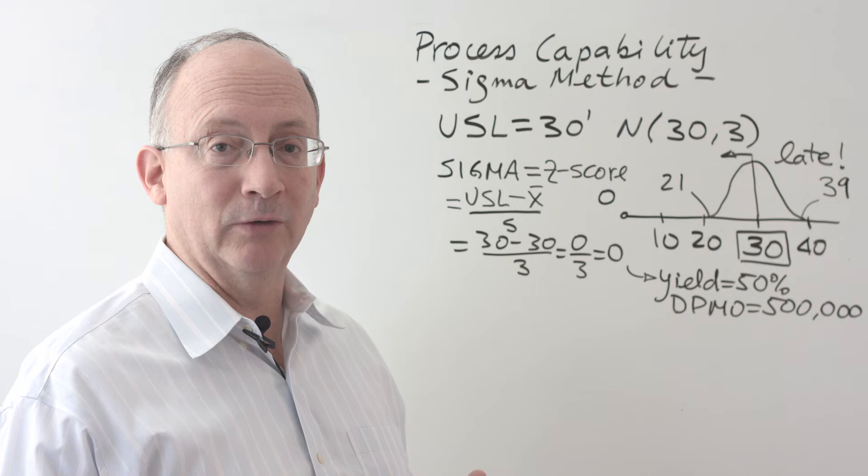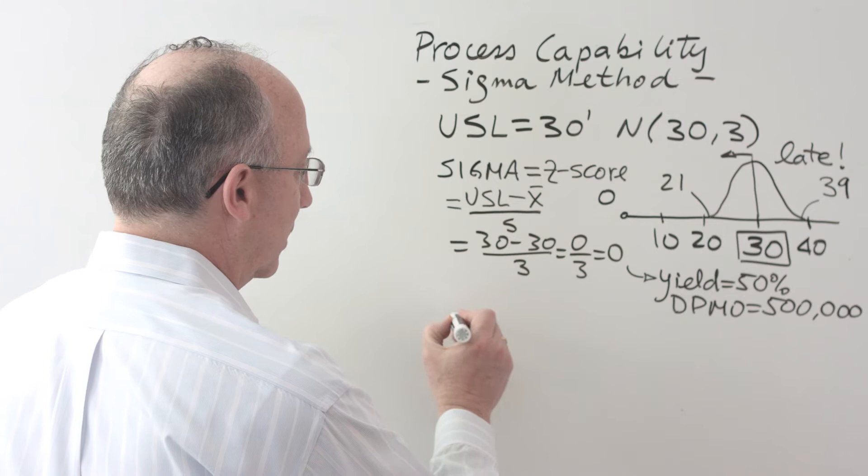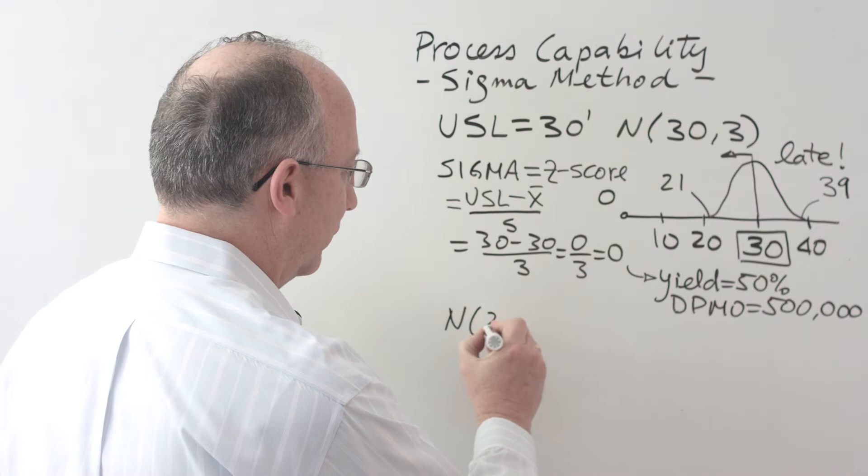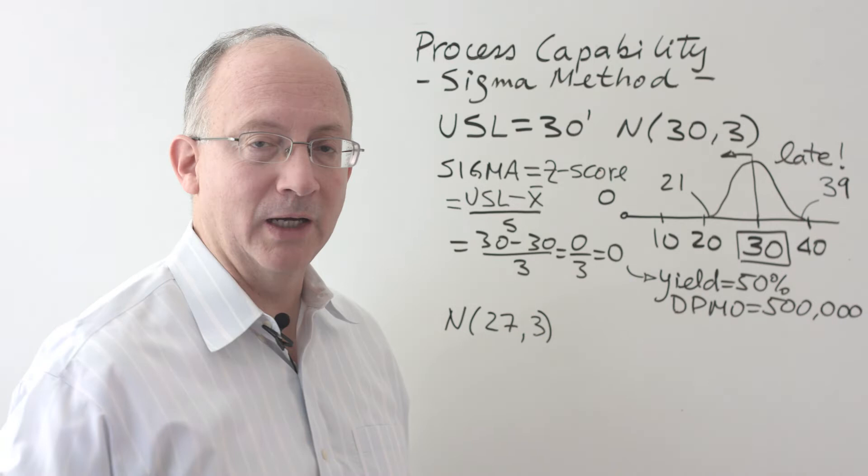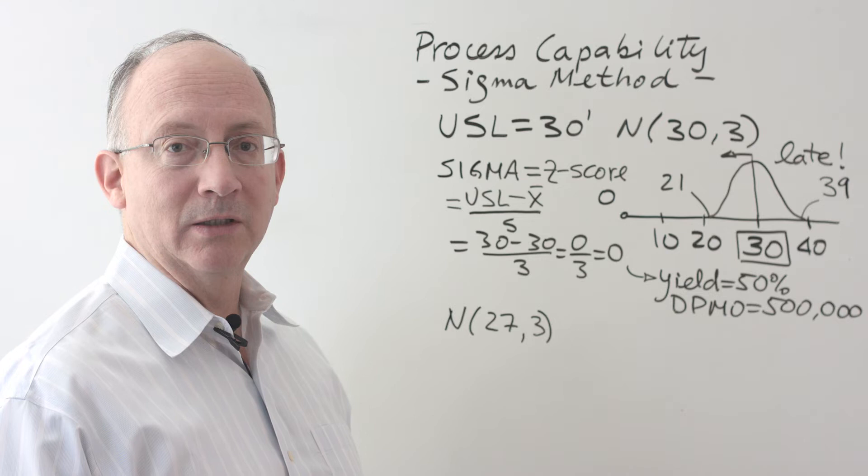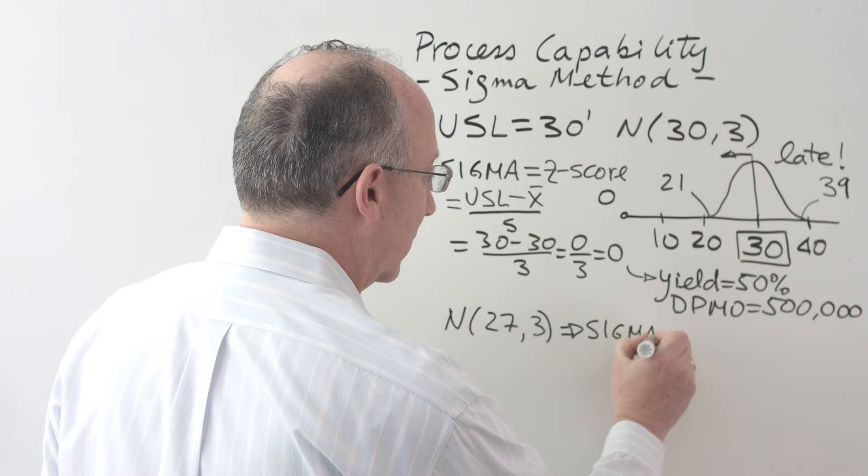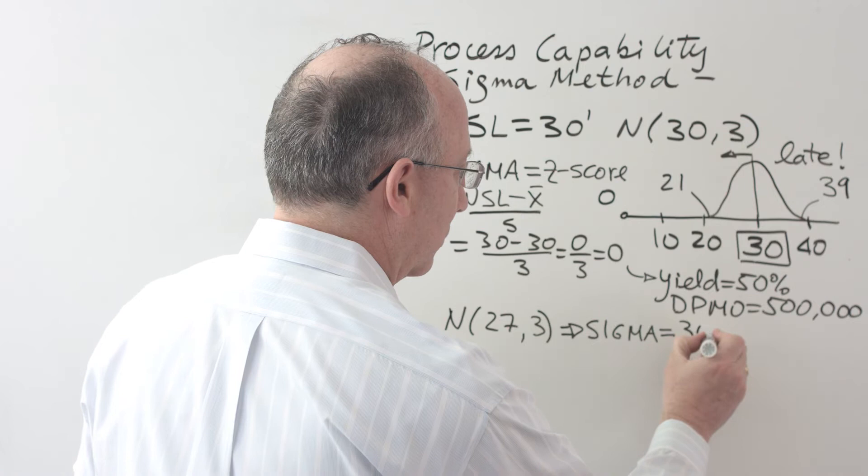Let's say that we were able to get to a normal distribution, a process that has an average that is faster. We could express that in this way, a normal distribution that has an average of 27 minutes, and let's say that we, for now, still have the same type of standard deviation. That is, the variability embedded into the process hasn't changed. How would this help us? The equation is going to be the same. In this case, the Sigma of our operation is simply going to be the same 30 minutes, which is the upper spec limit, minus the average, divided by the standard deviation. And that will give us a Sigma of 1.